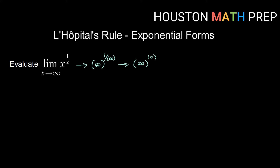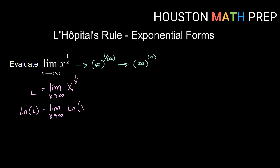So to do that, we're going to say this limit, if it exists, let's call it L — L for limit. So L is equal to the limit as x goes to infinity of x to the 1 over x power. Now to bring something out of the exponent, we can use our properties of logs. So I'm going to take the natural log of both sides. That's going to give me the natural log of L equals the limit as x goes to infinity of the natural log of x to the 1 over x power.